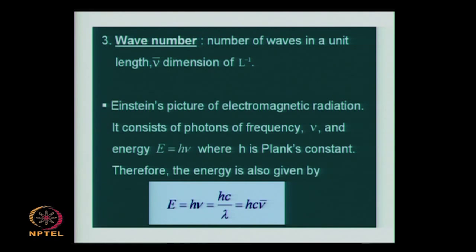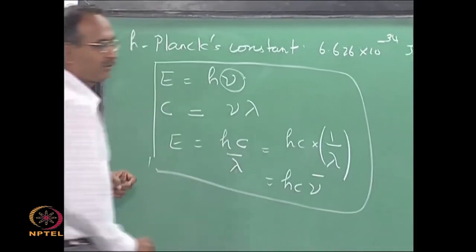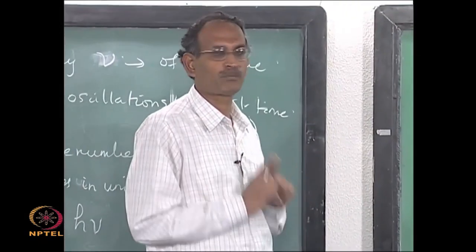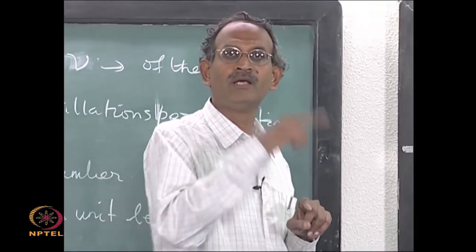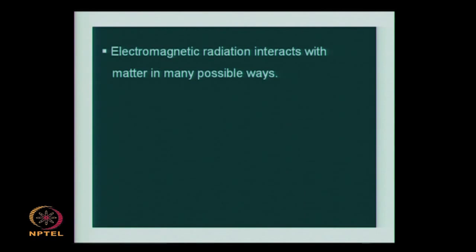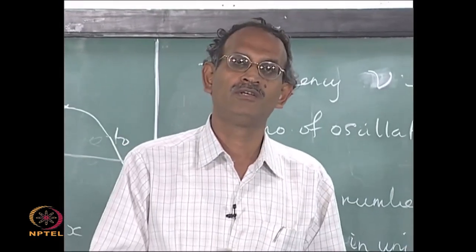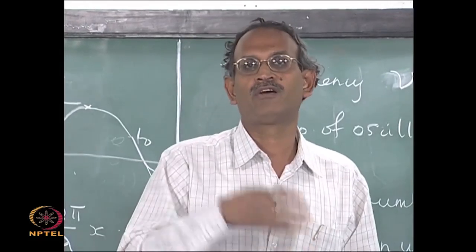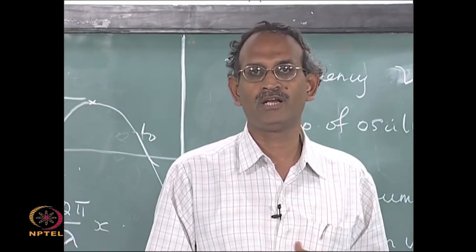Let us talk qualitatively about how radiation interacts with matter. Recall that electromagnetic radiation consists of an oscillating electric field and an oscillating magnetic field — these are the two components of the radiation, and therefore these are the two quantities which can interact with matter.